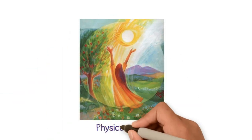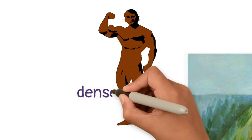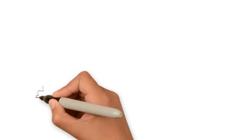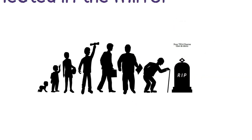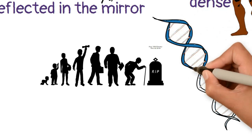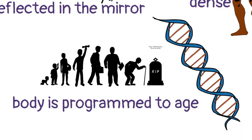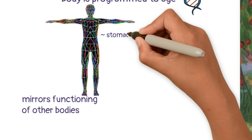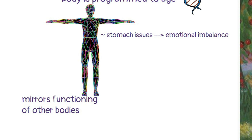We'll start with the physical body since our physical aspect is the most obvious one. It's the densest of all the bodies and hence it's visible to the naked eye — when you look in the mirror, this is the body you see reflected. Our physical body starts growing from the moment you are born and keeps growing till the very last breath you take. This body needs minimal intervention for its growth because it's already programmed into the cells of the DNA. The physical body mirrors the functioning of the other bodies — for example, stomach issues usually relate to some emotional imbalance.